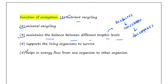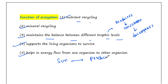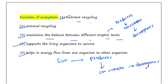The ecosystem supports living organisms to survive and helps in energy flow from one organism to another. The energy captured from the sun flows from the producers, then to consumers, then to decomposers, and finally back to the environment.